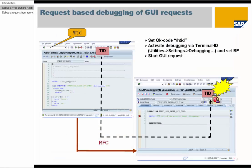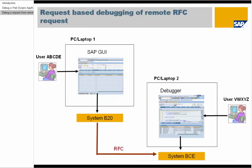We have just seen how to debug HTTP requests using Terminal ID and a browser plugin. To debug GUI requests, you just have to enter /HTID in your SAP GUI window, and the Terminal ID will be sent along with all requests from that window. If you then activate debugging via Terminal ID and set an external breakpoint at your remote function module, you can start the GUI request and the debugger will stop at your external breakpoint.